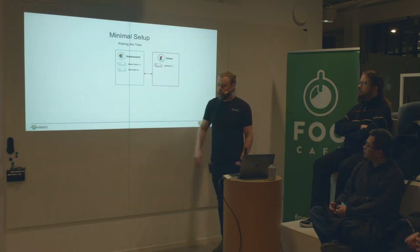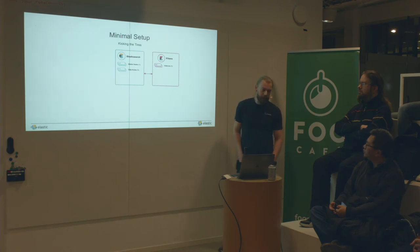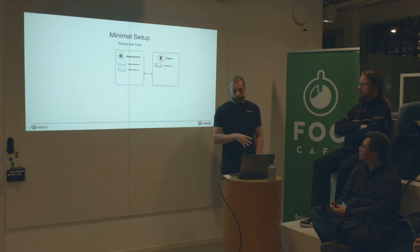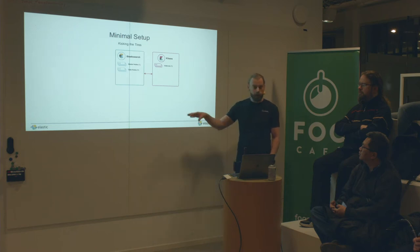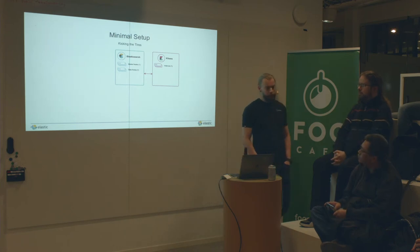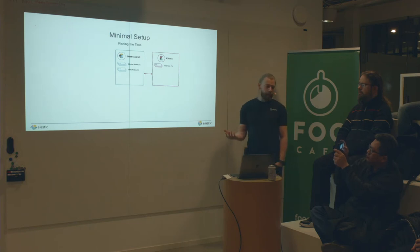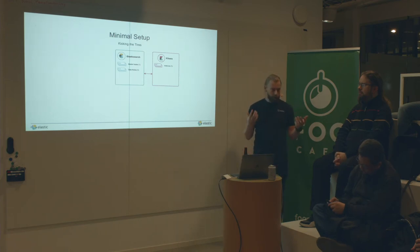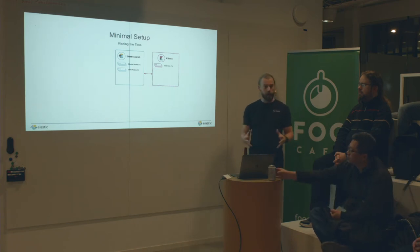Elasticsearch is based on a cluster, and the cluster has one or many nodes — basically servers. Every node can have one or many roles. One role is the master role, which handles cluster-wide actions like creating or deleting an index, or deciding which nodes data should reside on — it's the brain of the cluster. Then you have data nodes, where all the data is stored and where scaling happens. If you need more space or more compute power for queries and aggregations, you add more data nodes. That's how Elasticsearch scales.